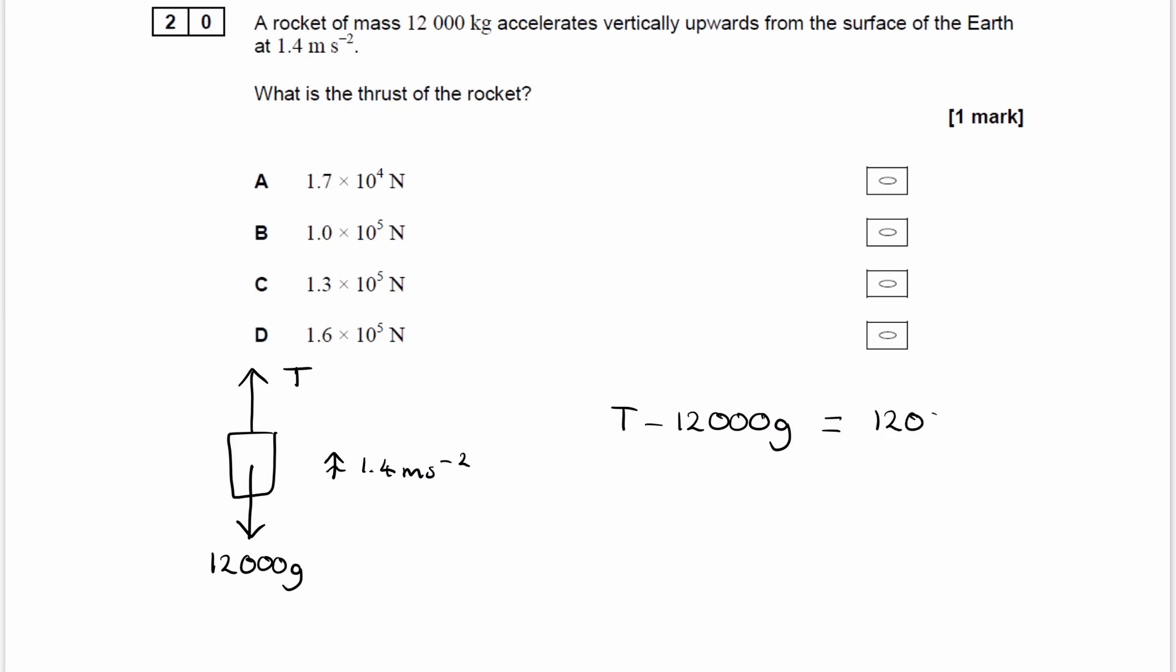So this is equal to 12,000 multiplied by a. So we rearrange this equation and then we get our answer. T is equal to 12,000 times 1.4 plus 12,000 times 9.81, and this gives us 1.3 times 10 to the 5 newtons. So our answer will be C.